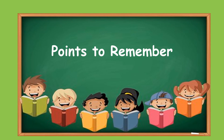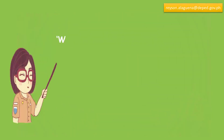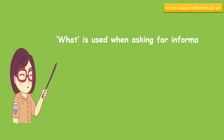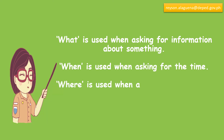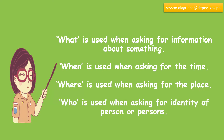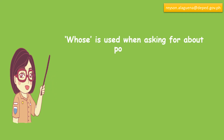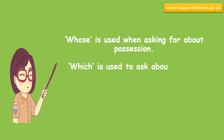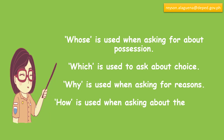Points to remember: 'What' is used when asking for information about something. 'When' is used when asking for the time. 'Where' is used when asking for the place. 'Who' is used when asking for the identity of a person or persons. 'Whose' is used when asking about possession. 'Which' is used to ask about choice. 'Why' is used when asking for reasons. And 'how' is used when asking about manner, quality, or condition.